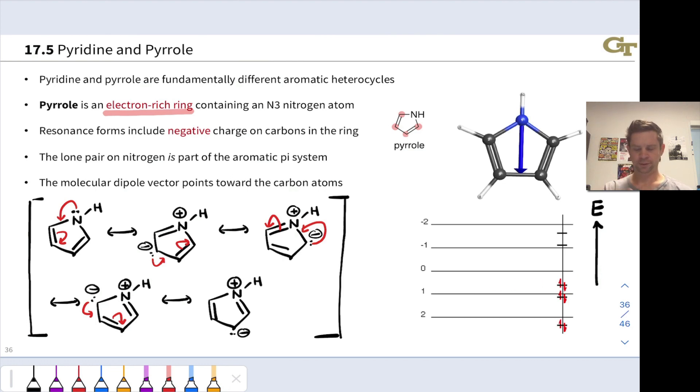Notice also the orbital energies here, in particular the highest occupied molecular orbital of pyrrole. This is at a higher energy than the highest occupied molecular orbital of benzene, indicating that this is an electron-rich ring. This pair of electrons in the highest occupied molecular orbital sort of wants to be given away because of its relatively high energy.